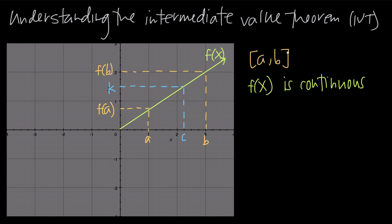Now if we assume those two things, here's what the Intermediate Value Theorem tells us. If we take x equals a and trace up until we hit the graph, then go over to the y-axis, whatever value we arrive at is the value f of a. Here x equals 1, so a equals 1. If we plug x equals 1 into f of x, we get f of 1, which in this case looks like it's about 0.75.